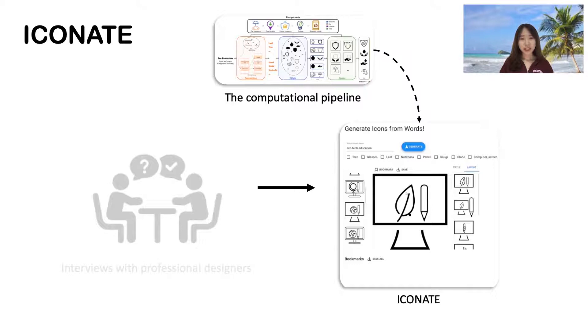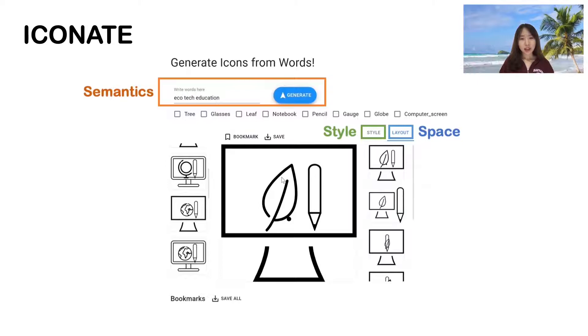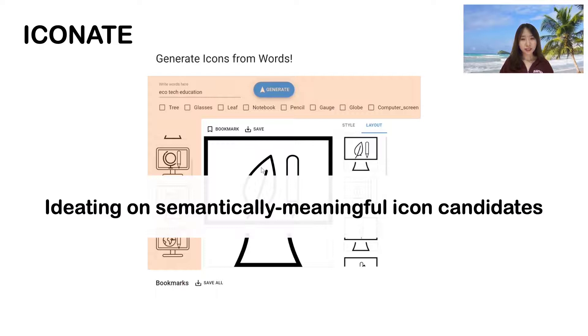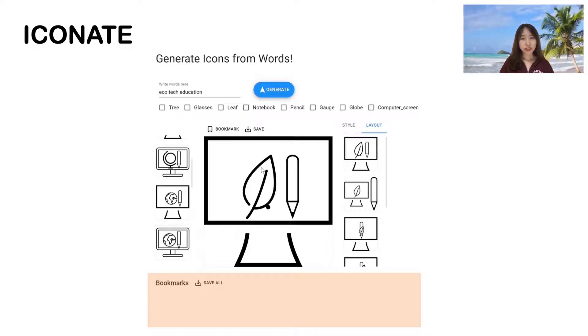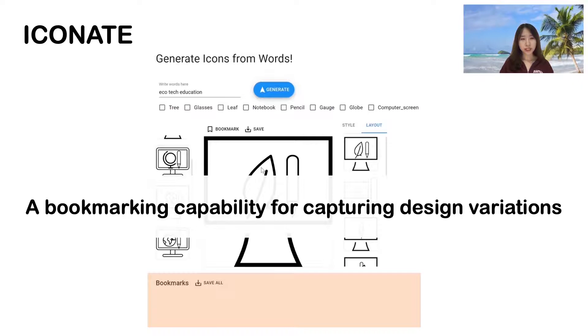We designed our Iconnet system based on the 3S framework. The Iconnet interface has three main components: a search interface for ideating semantically meaningful icon candidates, a canvas for customizing and refining the style and space of the resulting icons, and a bookmarking system for capturing design variations following professional workflows and the principle of iterative design.